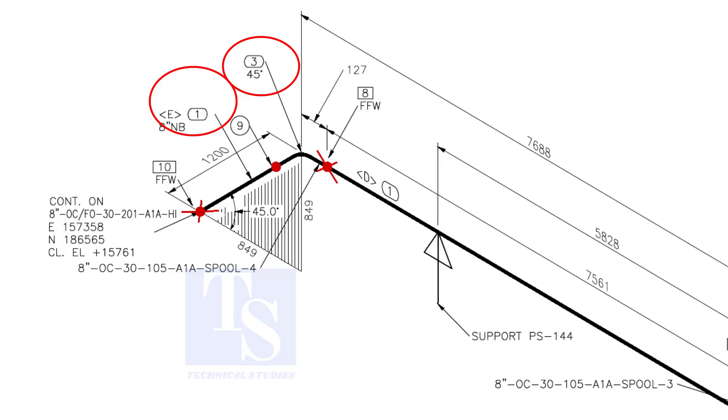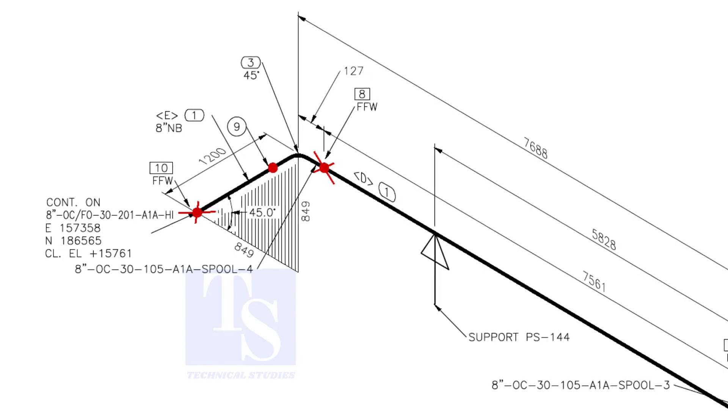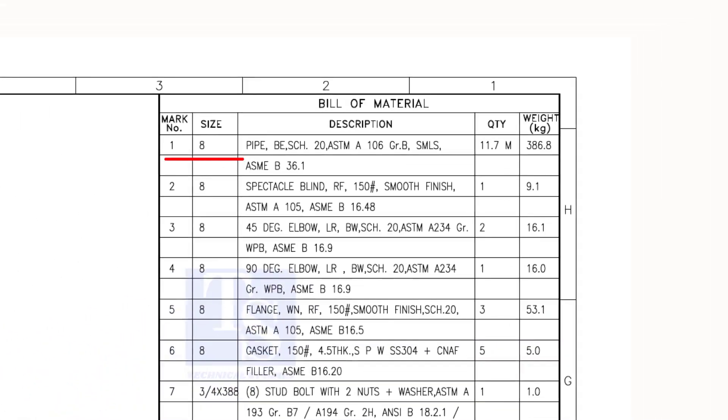We know item number 1 is 8-inch pipe and item number 3 is a 45-degree elbow. Let us confirm in the material list. As per the list, item number 1 is 8-inch bevel end, schedule 20, seamless pipe. Item number 3 is 45-degree long radius butt weld schedule 20 elbow.